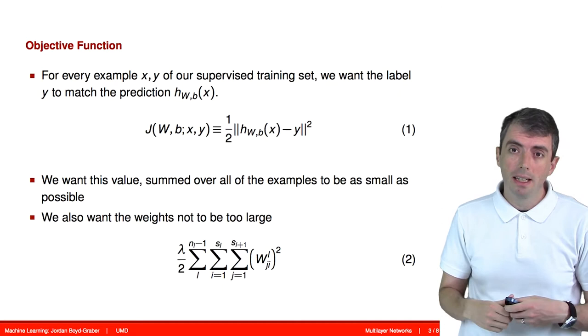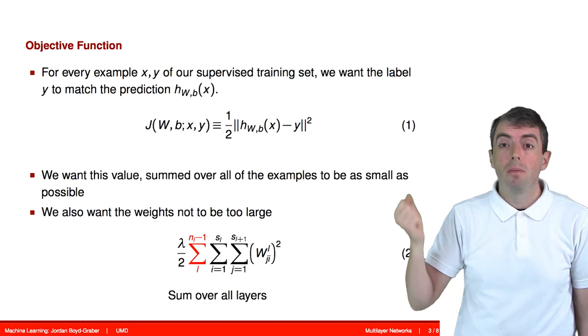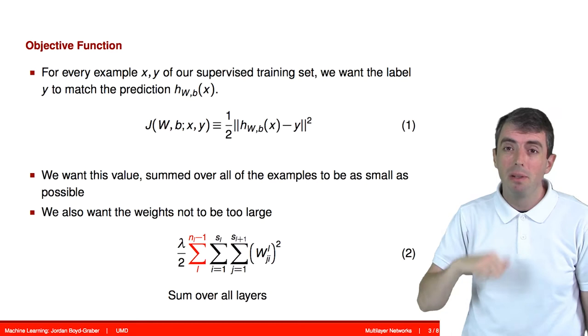There are a lot of sums here, so let's walk through this a little bit slowly. We're summing over all of the layers. So we have our input layer, we have hidden layers, and we have the output layer. We need to consider all of them.